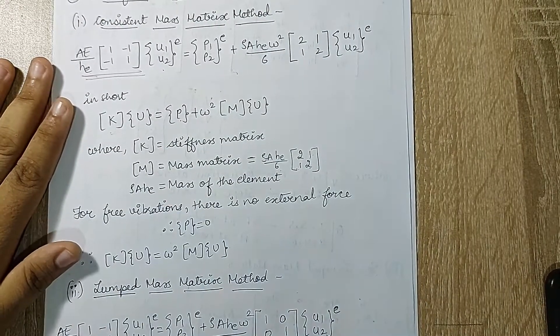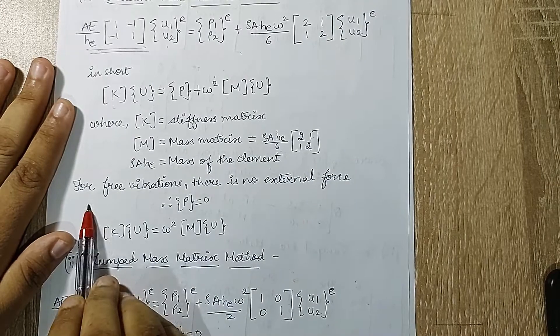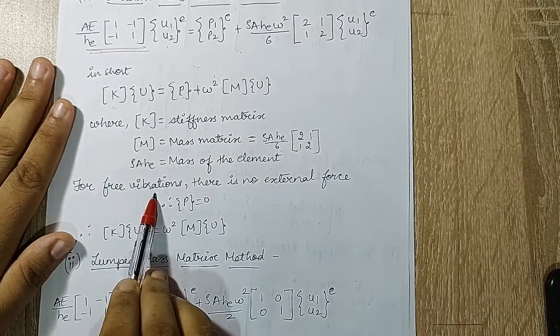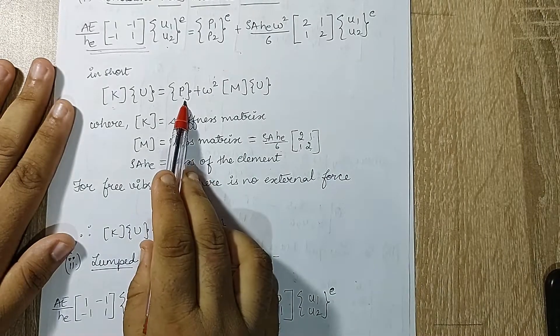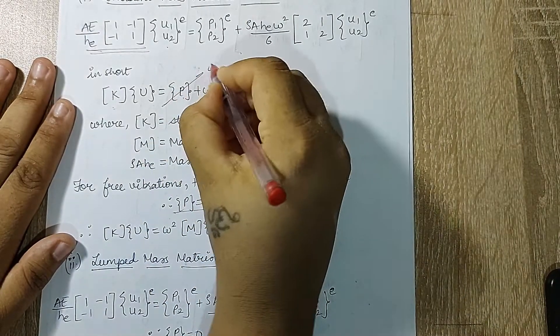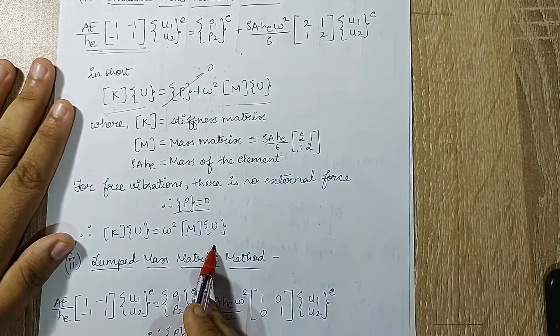Now this is the equation and the terms as I just discussed. This is very important: for free vibrations there is no external force, so this term P becomes zero. Once this becomes zero, only this much portion of the equation remains.